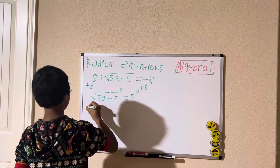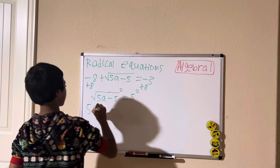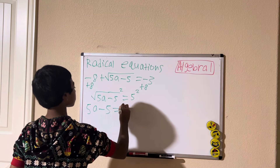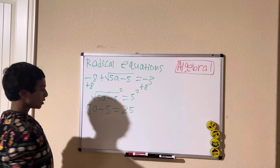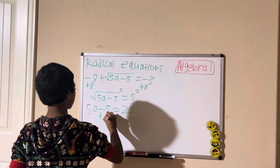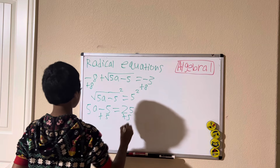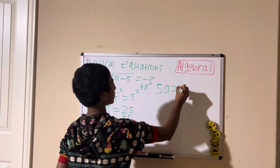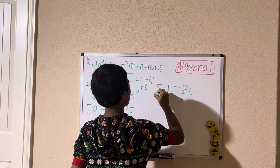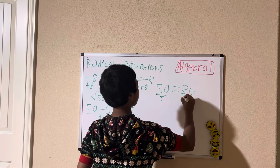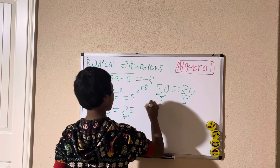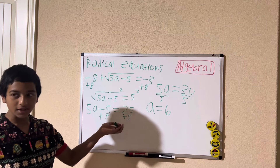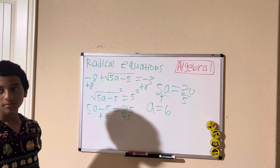Now we can square both sides of the equation, giving us 5a minus 5 equals 25. Now I'm going to add 5 to both sides, giving us 5a equals 30. Last step: divide both sides by 5, giving us a equals 6. And this is our solution for number 4.